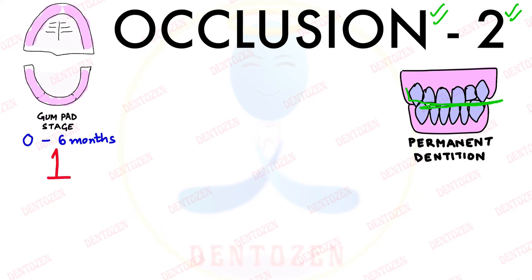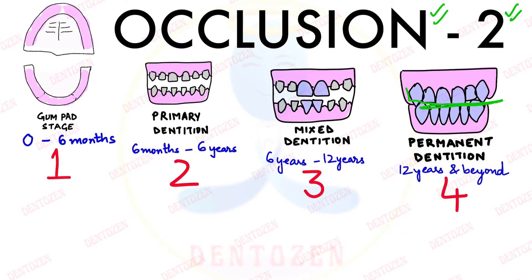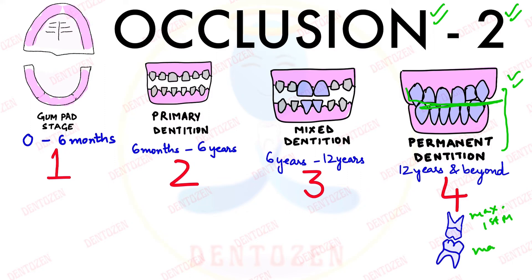So in the permanent dentition, how do we know whether it is good or not? By looking at the permanent molars. How our maxillary permanent first molar is aligned with our permanent mandibular first molar — the molar relationship between the two is going to determine the type of occlusion in permanent dentition.